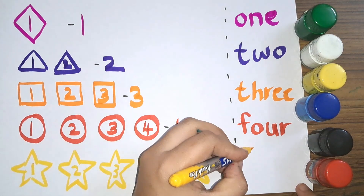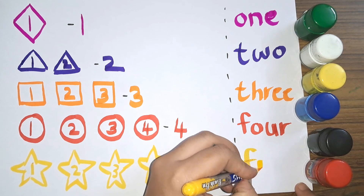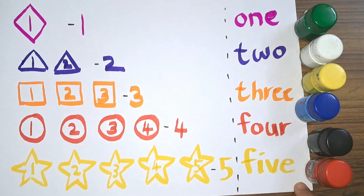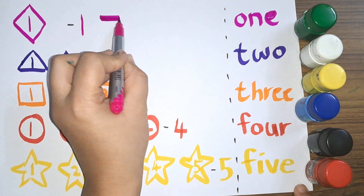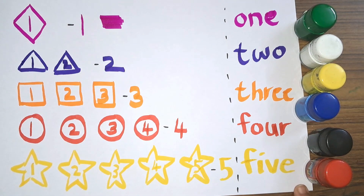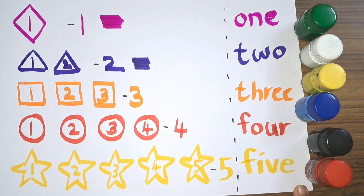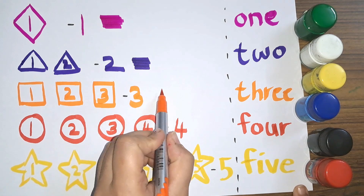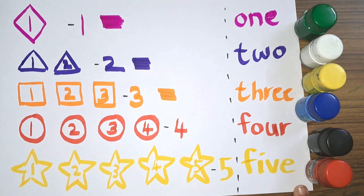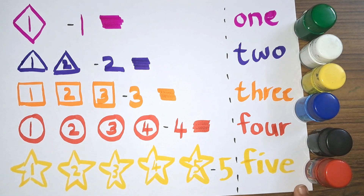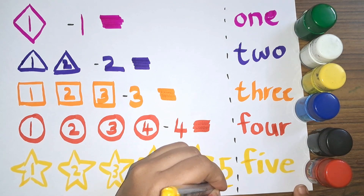The spelling of five is F, I, V, E — five. Let's see the colors. This is pink color. Next we have purple color. Next we have orange color. Then there is red color. Then the last one is yellow color.